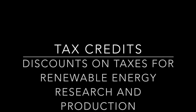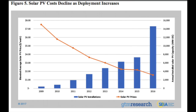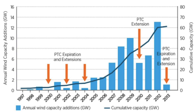Tax credits are discounts on taxes given to private sector organizations to make production and research of renewable energy more affordable. The cost of solar energy saw a 70 percent decline from 2008 to 2011, and the total cost of generating electricity from wind power dropped more than two-thirds since 2009. There is a clear correlation between the expansion of tax credits and increased efficiency in the renewable energy industry, and when tax credits were extended past their deadlines, research and production increased as shown in this chart.